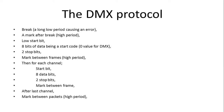The DMX protocol is a little more complicated. It starts with a break, which is a long low period that will cause the serial error. After the break there is a mark after break, which is a high period. Then we have a low start bit, then eight bits of data being the start code — which is zero for DMX dimmer data, different for RDM — then two stop bits, then a mark between frames which is like the idle in the serial protocol.